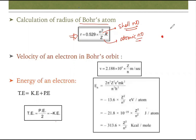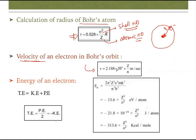Next is the velocity of the electron. Whenever there is a nucleus and one electron revolving around it with some radius, that electron must have some velocity. The velocity is given by v = 2.188×10⁶ × z/n meters per second, where z is the atomic number and n is the shell number. By putting values of z and n you can calculate the velocity in any orbit.